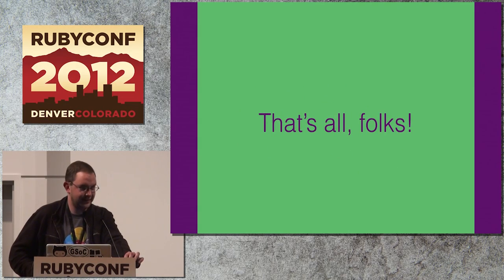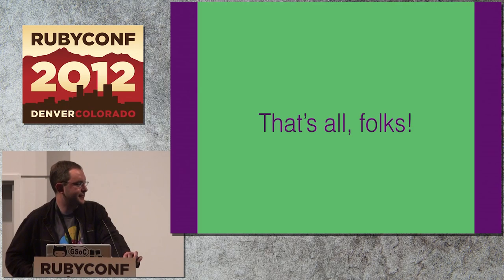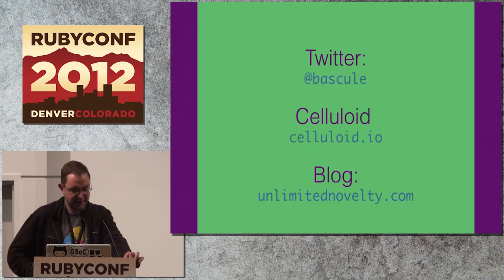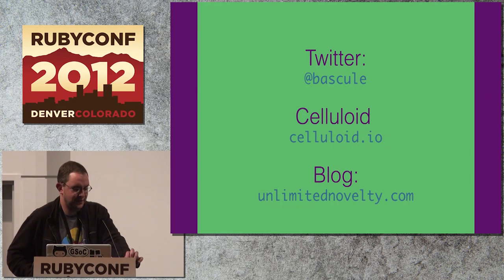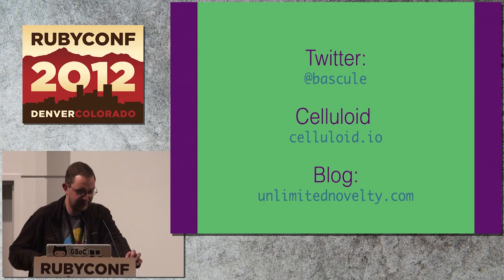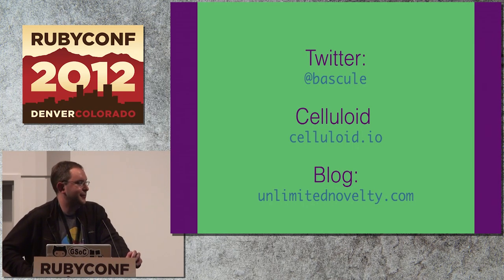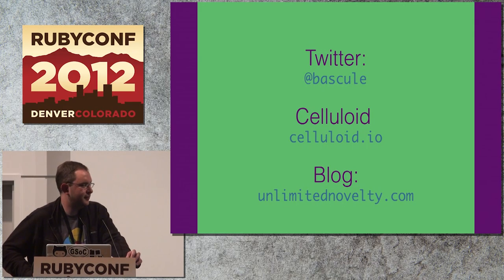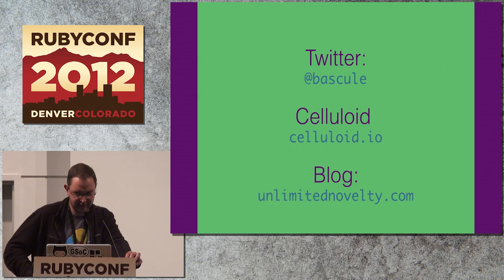And that's all I got. I am bascule on Twitter. The entry point to all these Celluloid projects is celluloid.io — if you want URLs for all this stuff, just go there and everything's linked. And I have a blog on unlimitednovelty.com.